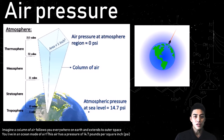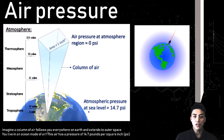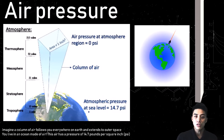To really understand air pressure, you have to imagine that a column of air follows you everywhere on Earth and extends all the way to outer space. You're very much like fish, in that fish aren't too aware that they live in an ocean made of water. You don't realize that you live in an ocean, but it's made of air.